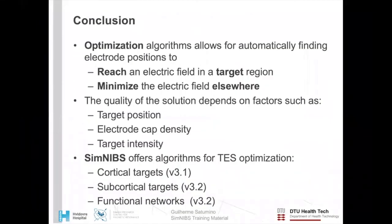In conclusion, SimNIBS has optimization algorithms that allow you to automatically find the best TES electrode montages to reach a given electric field in the target region, while minimizing it elsewhere. The quality of the solution is dependent on factors such as the target position, the electrode cap density, and the target intensity. And in addition to the algorithms to optimize electric fields for cortical targets that are already present in SimNIBS 3.1, we will, in SimNIBS 3.2, introduce new algorithms for optimizing electric fields in subcortical targets, and for optimizing electric fields as functional networks.